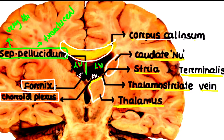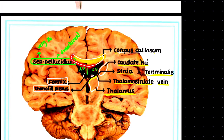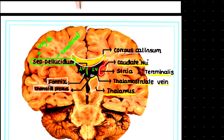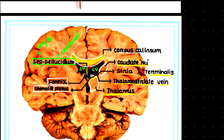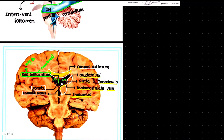To recap the coronal section: at the roof we have the corpus callosum; medially we have the septum pellucidum; laterally there are several structures including the caudate nucleus, stria terminalis, thalamostriate vein, and thalamus; on the floor we have the columns of fornix; and the rough structures forming the floor are the choroid plexus.